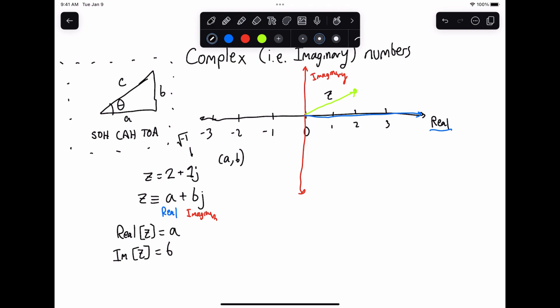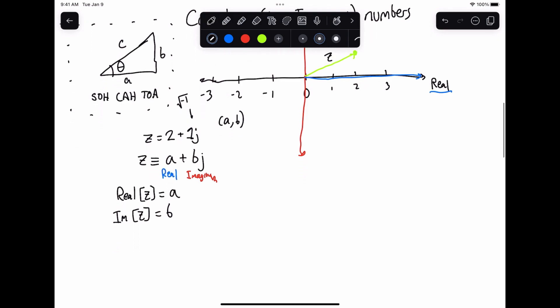but once again, this is just the same as writing this in Cartesian coordinates, a comma b. So why do we do this? Why do we introduce a square root of minus 1? The answer here has to do with one of the greatest mathematicians of all time, which is Euler. And Euler came up with a very, very interesting expression. Basically, what Euler told us is that e to the j theta is equal to cosine of theta plus j sine of theta.